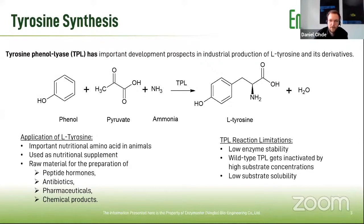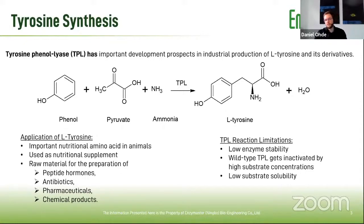Tyrosine is a very interesting compound, as it's used in nutritional feeds for animals, but also in nutritional supplements. It's used as raw materials to produce antibiotics, peptide hormones, pharmaceuticals, and chemicals in general.